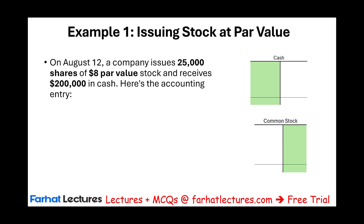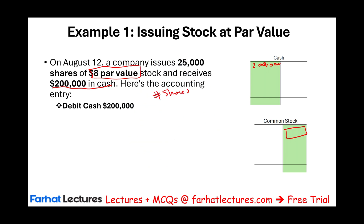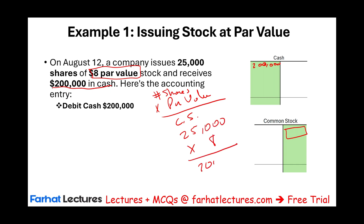Starting with the first example. On August 12, a company issued 25,000 shares of $8 par value and received $200,000 in cash. The easiest part is to start with cash — debit cash $200,000. To complete the common stock entry, we take the number of shares times the par value: 25,000 times $8 equals $200,000. So we happened to have sold the shares exactly at par value. In the real world, that does not happen.